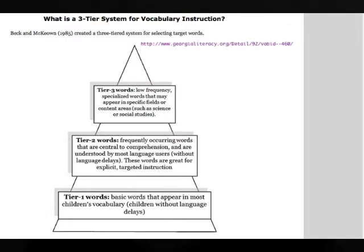Reading researchers put vocabulary into three tiers. Tier one consists of everyday words. Tier two has tougher words, but ones that are still frequently used. These include transition words and those words often used in directions that students are expected to read and understand, such as describe, explain, contrast, and investigate. These words, because of their frequent use, we sometimes overlook as far as the need to teach them explicitly.